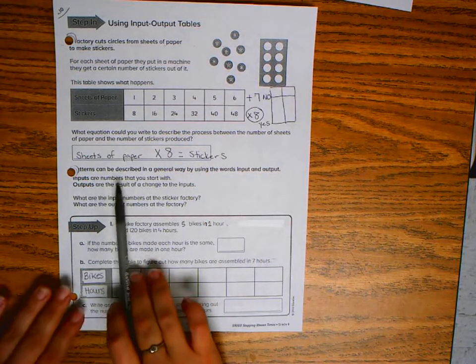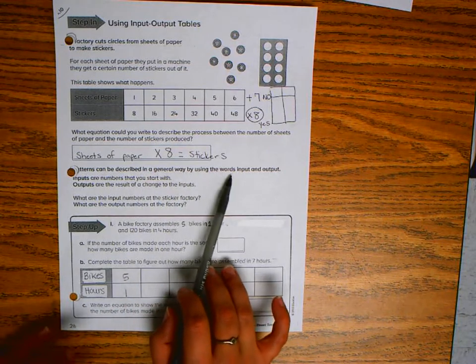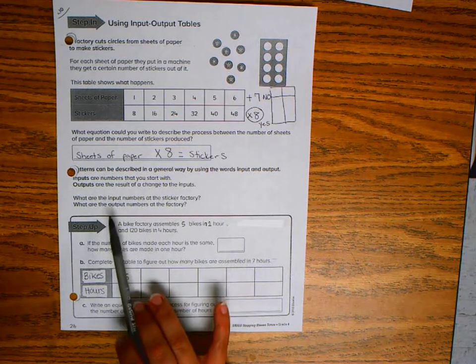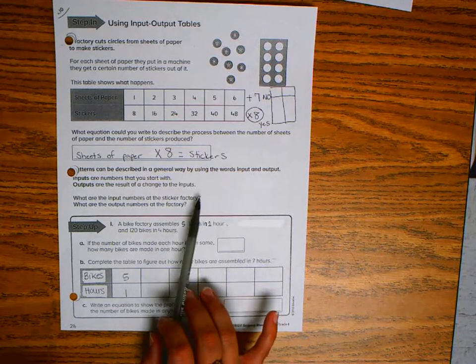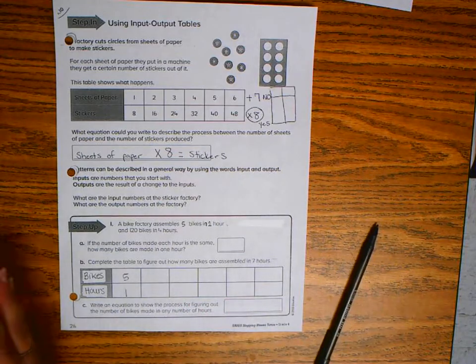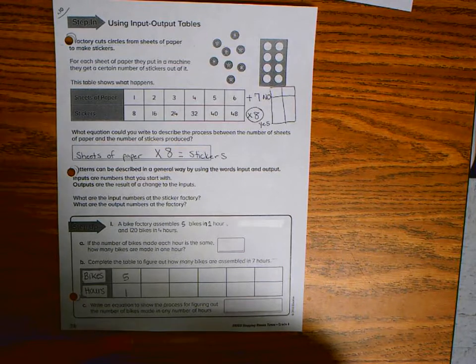Patterns can be described in a general way by using the words input and output. Inputs are numbers that you start with, outputs are the number you're getting out—it's the result. Inputs affect what your output will be.